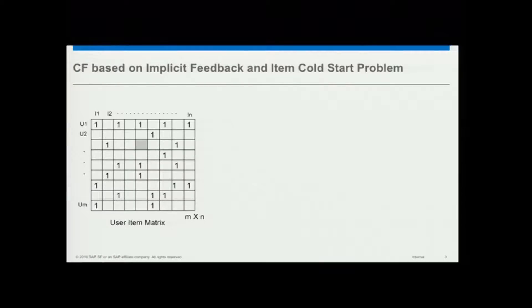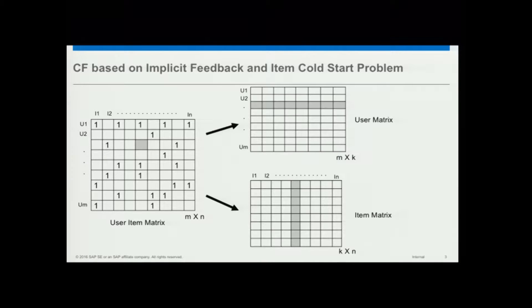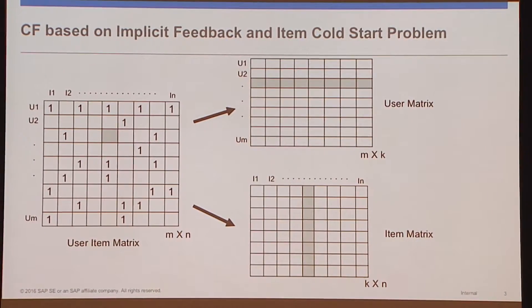The collaborative filtering approach, particularly for implicit feedback, is that you have this kind of matrix, and the idea is you want to generate a user matrix and an item matrix. The user representations are basically the rows here, and the item representations are the columns. When you do matrix factorization, these are parameterized and you try to combine and see, based on some objective, how you can reconstruct back something.